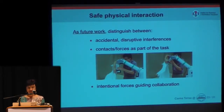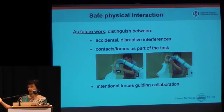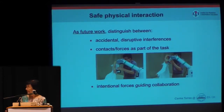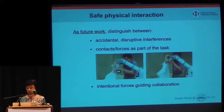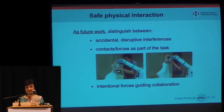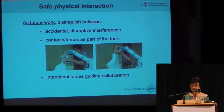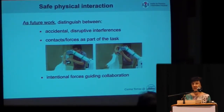As future work in safety, we like to distinguish between three types of contacts. One: accidental contacts, disruptive, as the ones shown in the video. But there are other types of contacts that are part of the task. For instance, if we try to put a shirt on a person, it can happen that the sleeve gets stuck in the elbow, and then a different DMP needs to be applied, so a change of skill is required. Another type of forces to distinguish are those guiding collaboration, which will show up later in the talk.